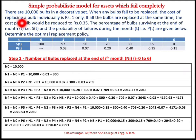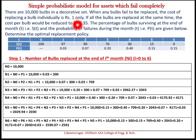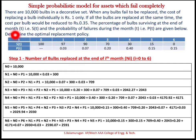The problem statement: there are 10,000 bulbs in a decorative set. When any bulb fails and is replaced individually, the cost is 1 rupee per bulb. If all bulbs are replaced at the same time, the cost per bulb is reduced to 0.35 rupees. The percentage of bulbs surviving at the end of each month S(t) and the probability of failure P(t) are given.